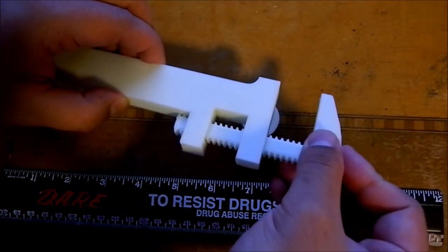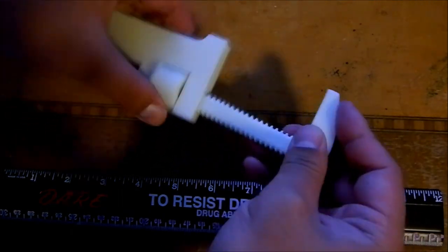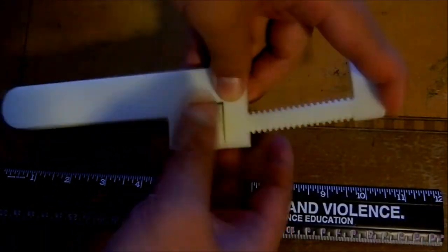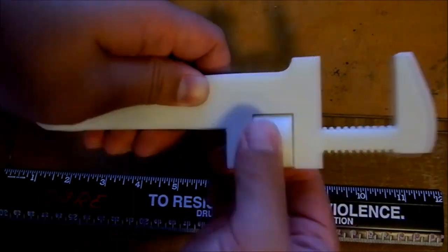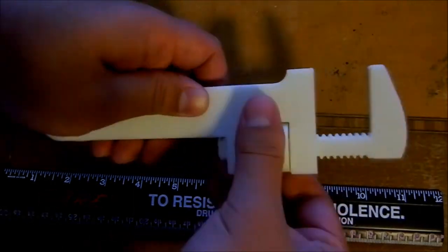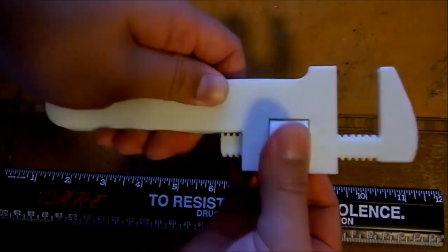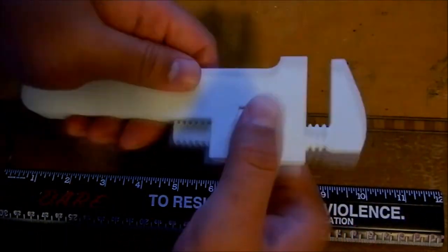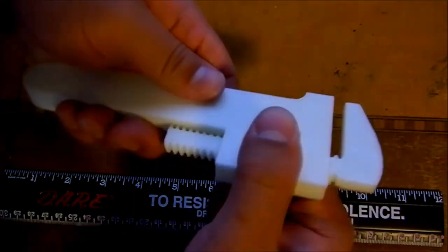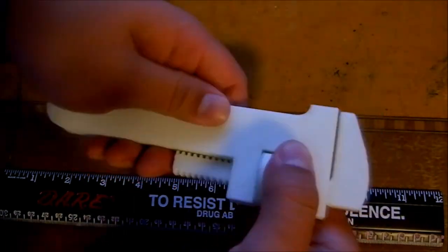Once the parts are printed, the pipe wrench can be assembled. Just like a real pipe wrench, the jaws can be adjusted by turning the nut.